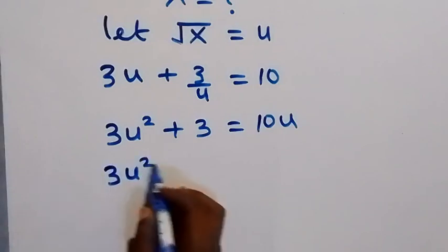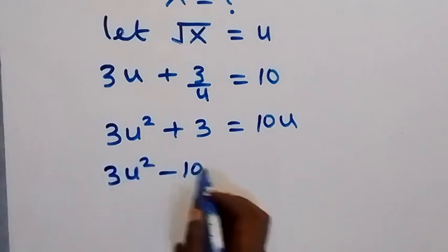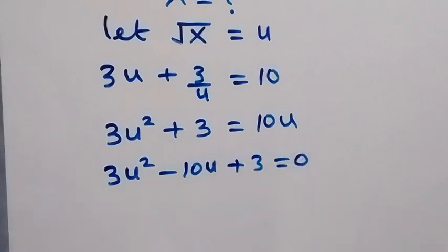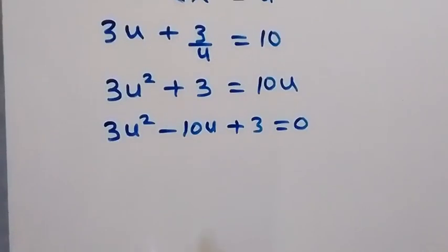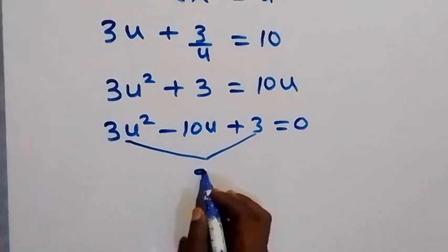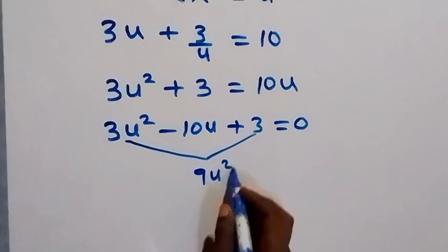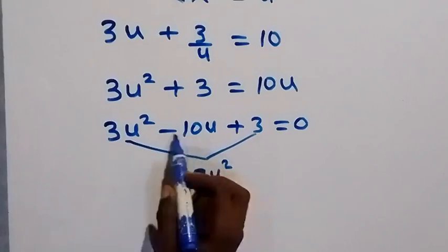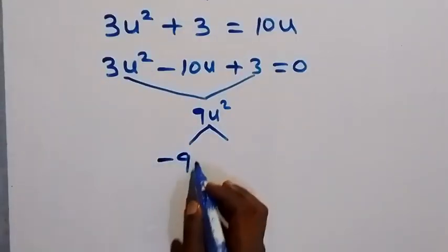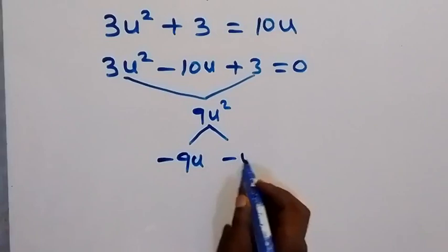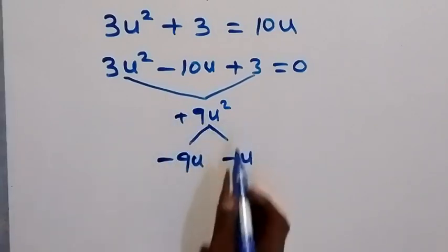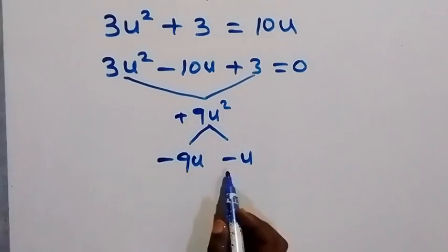Bringing 10u to the left side, we form the quadratic equation 3u² - 10u + 3 = 0. To factorize, we multiply the leading coefficient and constant: 3 × 3 = 9u². We need factors that multiply to 9u² and add to -10u, which are -9u and -u.